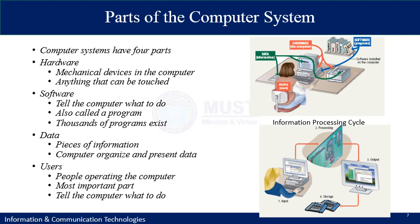This leads us to the parts of a basic computer system. A computer system is usually comprised of four parts. The first is hardware — hardware consists of mechanical devices in the computer, and anything that can be touched within the computer system is called hardware. The second fundamental part is software, which tells the computer what to do. It is often called a program, and there are millions of software programs that exist for usage.